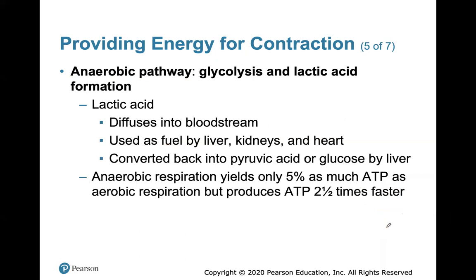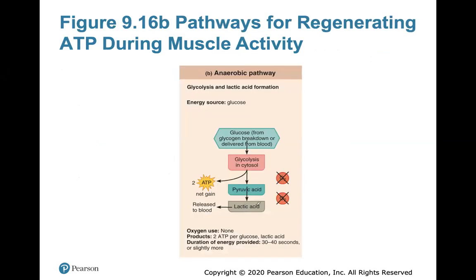Lactic acid diffuses into the bloodstream and is used as fuel by your liver, kidneys, and heart, eventually converted back into pyruvic acid or glucose. Anaerobic respiration only yields 5% as much ATP as aerobic respiration — without oxygen, your cells can't create as much ATP as needed.